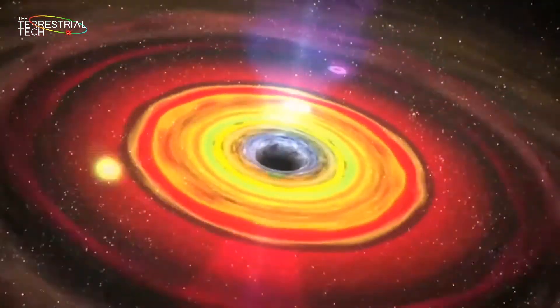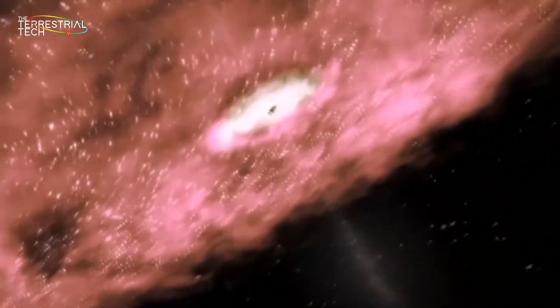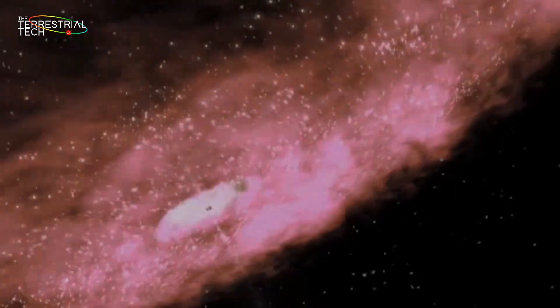Some of these active galactic nuclei release plasma jets at speeds close to that of light, and these jets get released along the axis of the accretion disk.